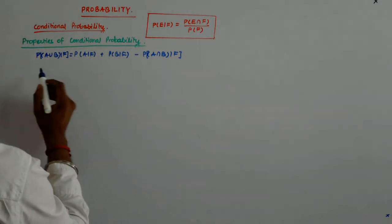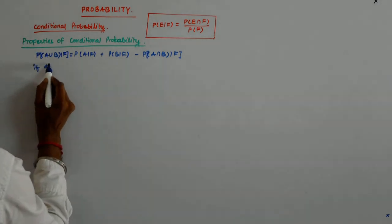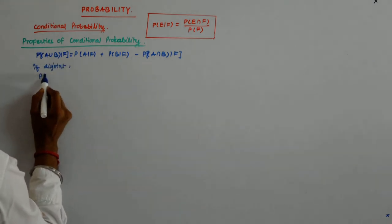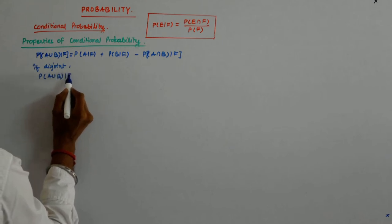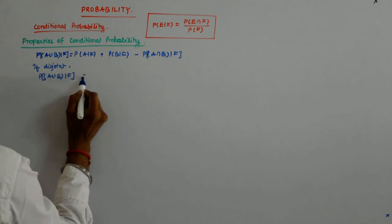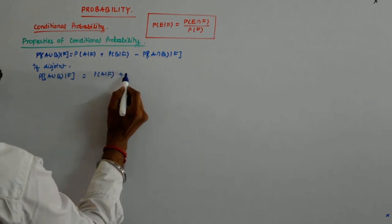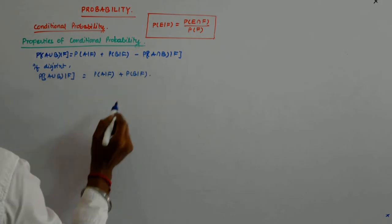Now, if it was disjoint, then we had seen that P(A∪B|F) further gets simplified. It just becomes P(A|F) plus P(B|F).